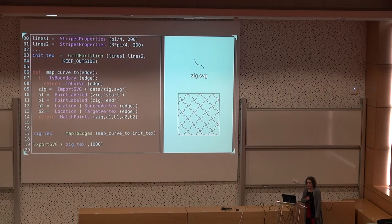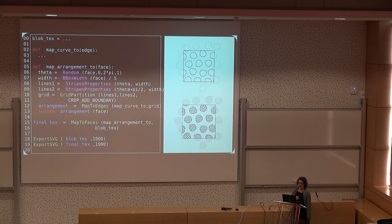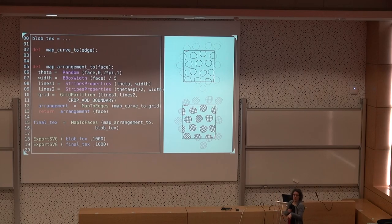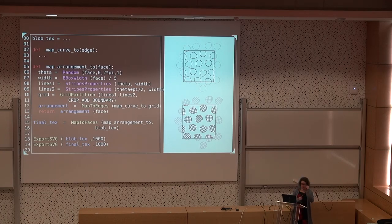Another example maps a curve on each edge of the grid. Here you have to be more explicit to specify incidence, telling it the starting point of the curve has to be placed at the starting point of the edge. And that's it. A more complex example shows that with the same way of thinking about mappers, you can map a full arrangement into each face of a given partition. Here we start from the previous result, define a map arrangement — a mapper applied to each face — and inside it we define a new partition which is the grid and so on, mapping this partition inside each cell of the texture. Once the user understands this principle, it gives a lot of freedom to produce very complex textures.